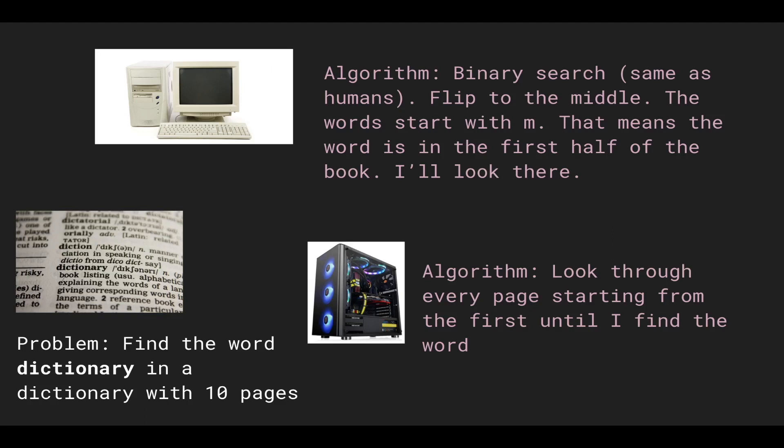The slow computer's algorithm is something called binary search, similar to what we do in real life as humans. We flip to the middle of the dictionary — say we land on words starting with M. Since we're looking for a word starting with D, it must be in the first half. So we disregard the second half and every time we flip to a new page we're cutting the search space in half.